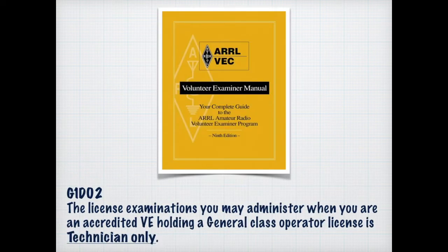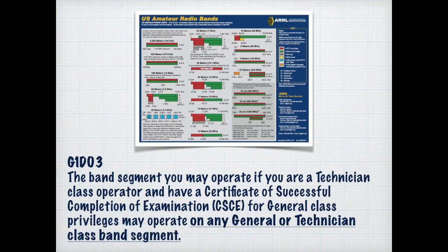The rule of thumb is that you may administer an exam one level down from where you are, with the exception of being an extra — when you're an extra, you can administer an extra exam. But as a general class operator license holder, you can only administer the technician exams. Unlike when you get your technician license where you have to wait for your license to appear in the database, when you get your general class license, you immediately get privileges and can operate on any general segment, as long as you append your call sign with a slash AG.